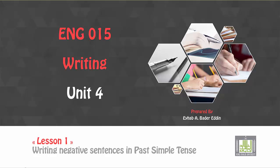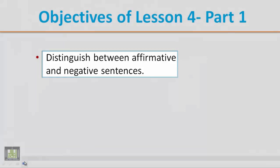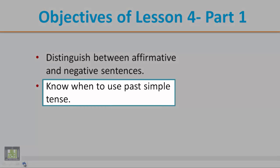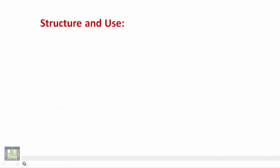Hello everyone, today we're going to start Unit 4, Part 1, which mainly focuses on writing negative sentences in past simple tense — كتابة جمل ونفيها في زمن الماضي البسيط. The objectives of this lesson are: number one, to distinguish between affirmative and negative sentences; number two, to know when to use past simple tense استخدام الماضي البسيط; and how to negate sentences in the past simple tense وكيفية نفي هذه الجمل في هذا الزمن.